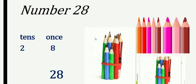And the next one is twenty-eight. How many bundles? Two bundles of ten colors. So we write two 10s. And how many loose colors? Count with me: one, two, three, four, five, six, seven, eight — eight loose colors. So we write eight ones. All these colors are different — orange, red, pink — they are all separate, that's why we count them as ones. So two, eight — twenty-eight.